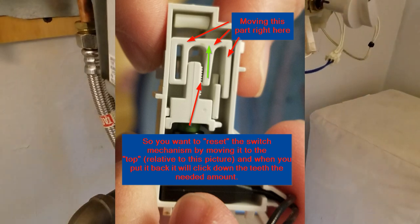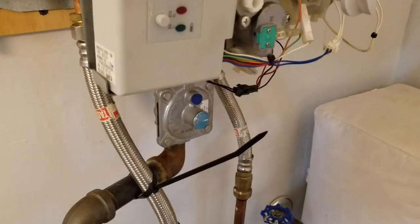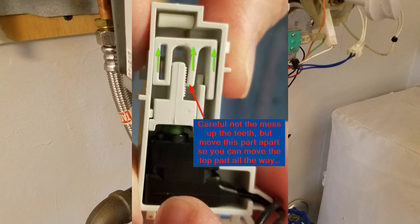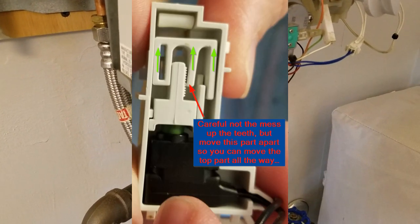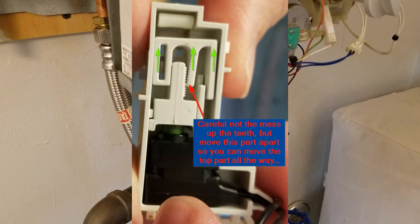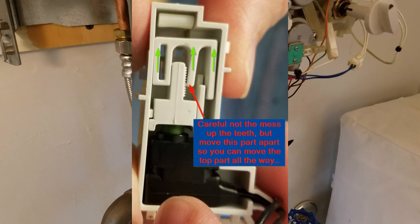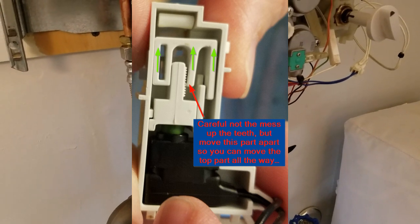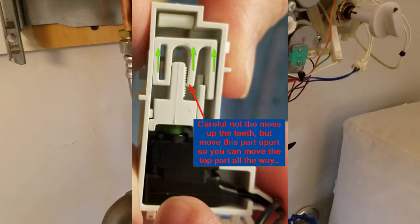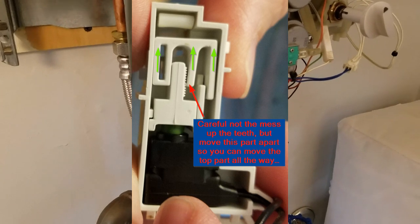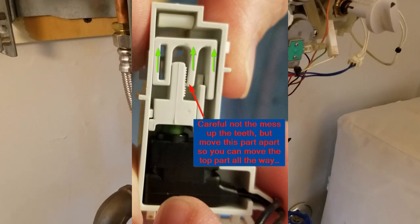So you can reset this switch because if it gets bumped or over time or whatever it moves down too far, you can pull the top part back up. You just use a little screwdriver in that gap there. Just be careful, everything's plastic so don't break it. But you can move the screwdriver right in the little grooves where the little lines are and push it out and scoot those up toward the top. I should have a little arrow in this video showing where that is.